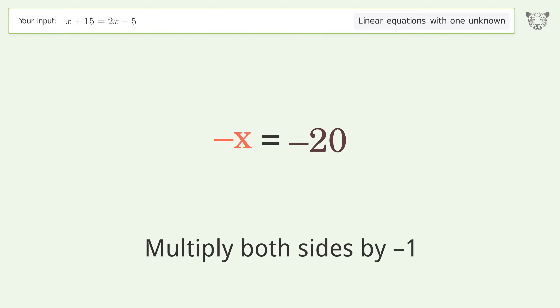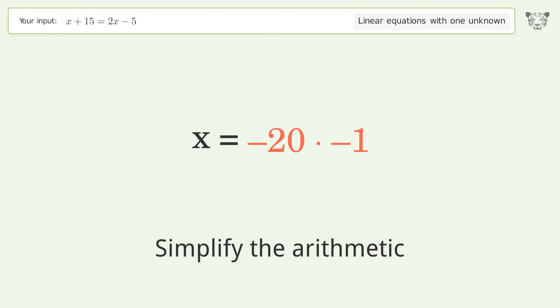Convert the x into a positive number. Multiply both sides by negative 1. Remove the ones. Simplify the arithmetic.